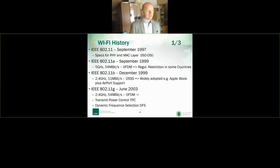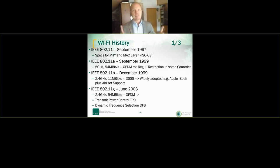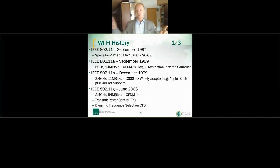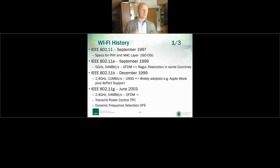Dynamic Frequency Selection was also important at that time because wireless LAN was becoming more popular and everyone was using channel six. Channel six became so congested with interference that bandwidth suffered. DFS automatically looks for a free channel — say channel seven or three — and moves there. That was a very important function.